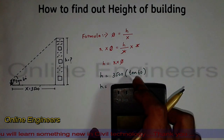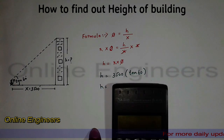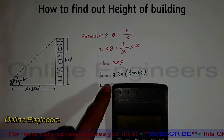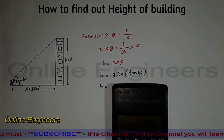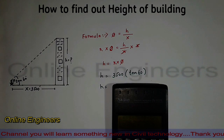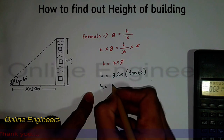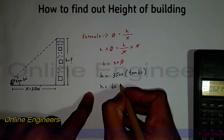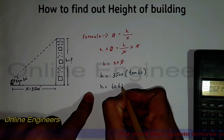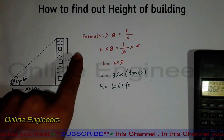First we will find tangent of 60 degrees, and then multiply by X, which is three thousand five hundred. This gives us six thousand and sixty-two feet.